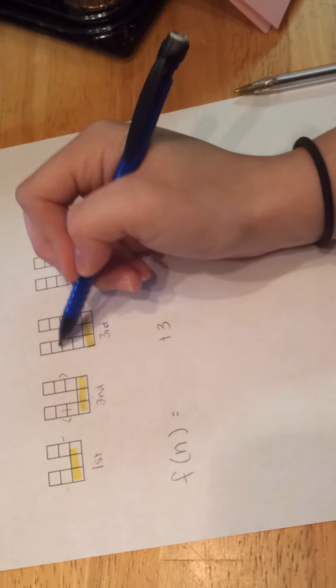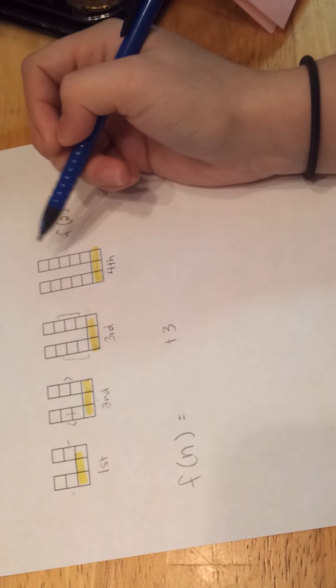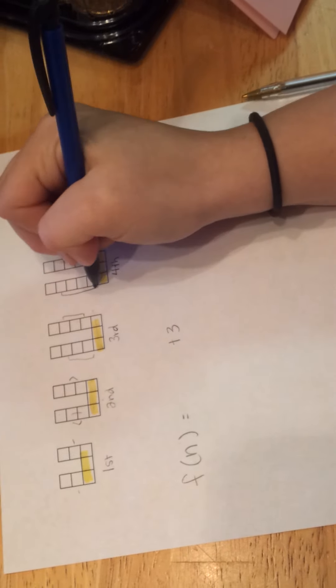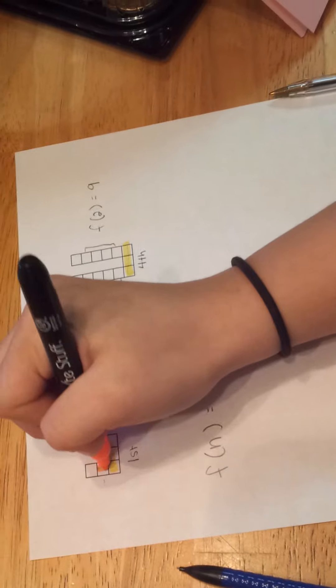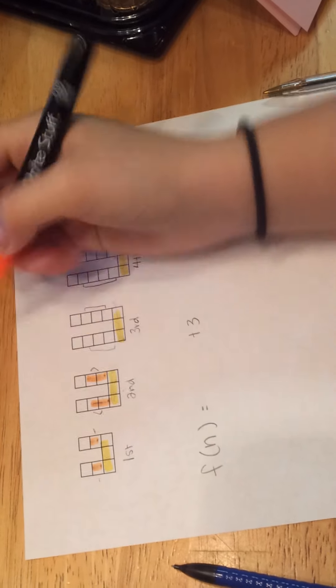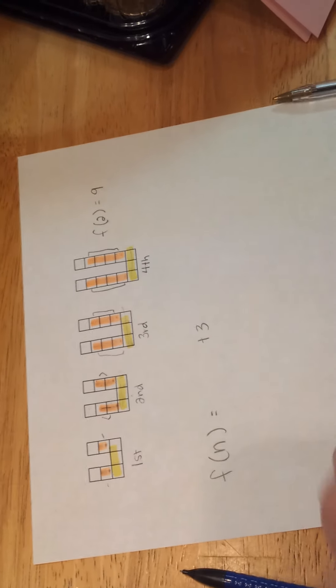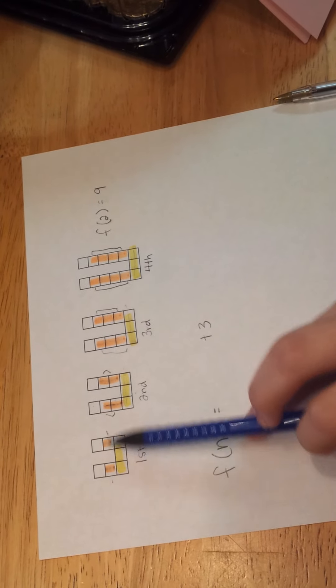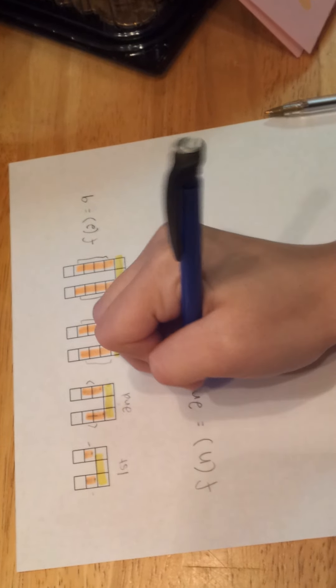For figure 3, there are 3 squares. 1, 2, 3, 1, 2, 3. For figure 4, there are 4 squares. And we can show that with the orange marker. This is showing that each figure has the n amount of blocks twice, because there are 2 legs. And we can show that with 2n.